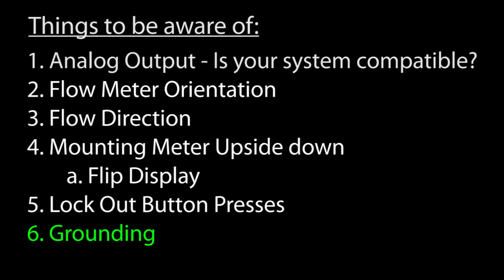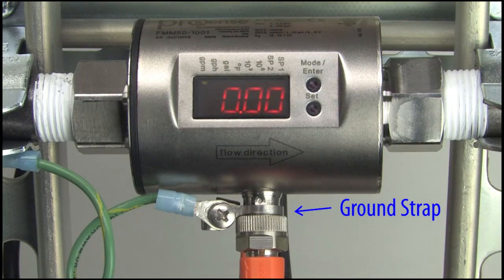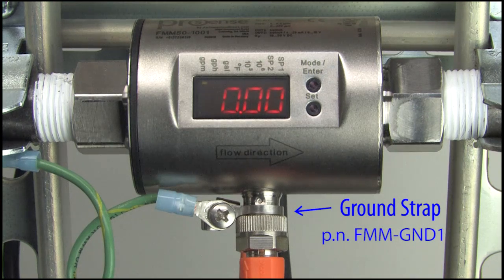This is a class 3 device so the power supply doesn't have to be grounded, but the flowmeter itself does need to be grounded. So if you put this inline in a PVC pipe system, be sure to run a ground wire from the unit. AutomationDirect has a convenient ground clamp for this if you need it.